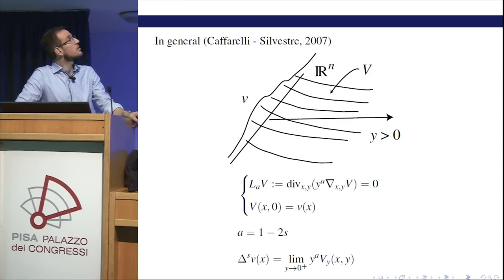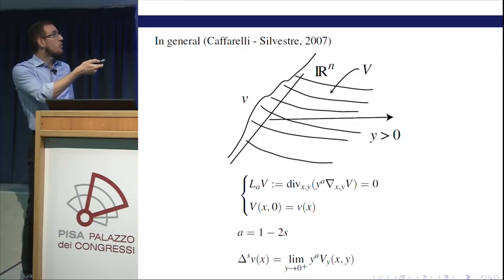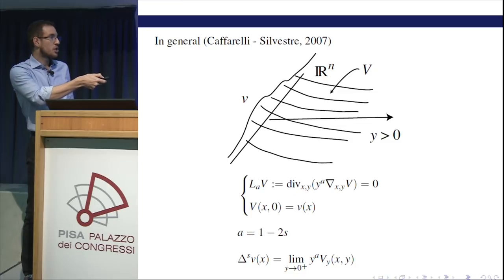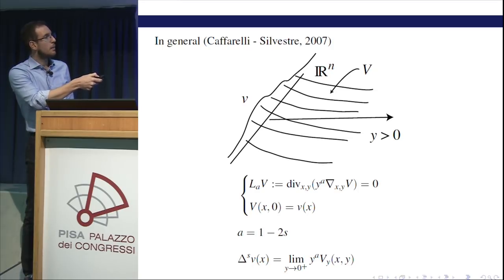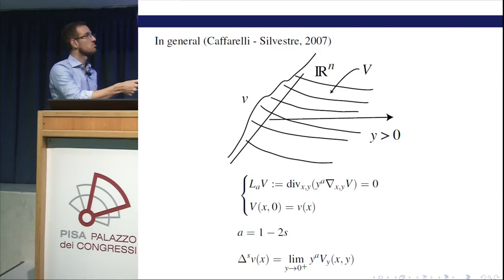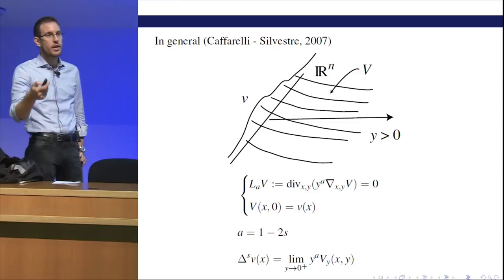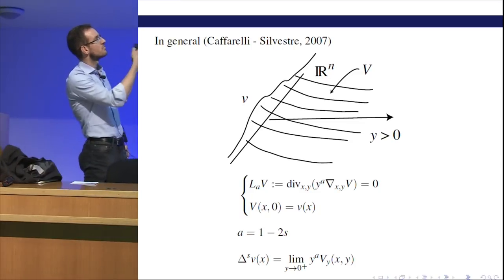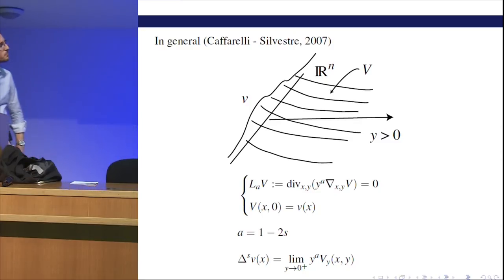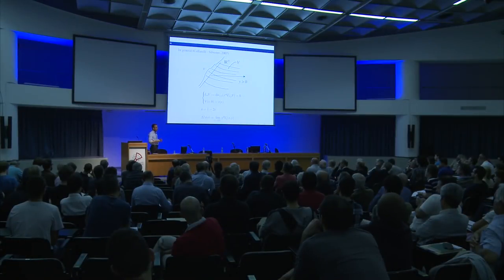In 2007, Caffarelli and Silvestre reproved this independently and gave a very simple proof of the following fact: to recover the fractional Laplacian with any exponent s, you solve a Dirichlet problem with a weighted operator, where the weight is y to the A, and A is related to s by the formula A = 1 minus 2s. In particular A is zero when s is 1/2, recovering the Laplacian. Then you compute a weighted Neumann condition: take y^A times V_y and take the limit as y tends to zero. So these fractional Laplacians can be treated by adding one extra variable and working with local operators.